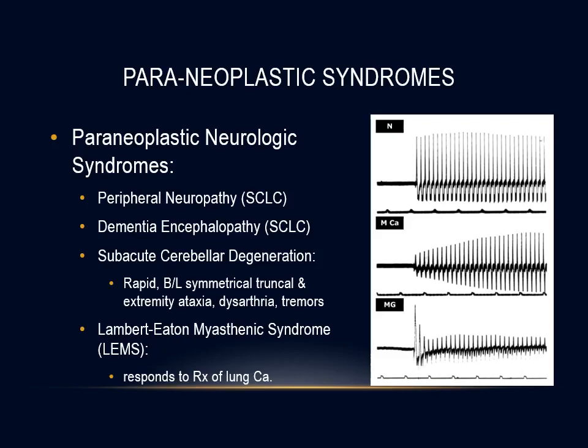Patients with paraneoplastic cerebellar degeneration typically present acutely with dizziness, nausea, and vomiting, progressing over days to gait instability and other cerebellar signs such as dysarthria and tremors. Lambert-Eaton myasthenic syndrome is uncommon and occurs much less frequently than myasthenia gravis. Most patients present with slowly progressive proximal muscle weakness, particularly involving the legs, with a unique diagnostic feature of recovery of lost deep tendon reflexes and improvement in muscle strength with vigorous brief muscle activation.